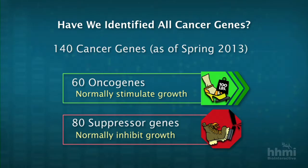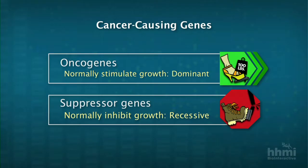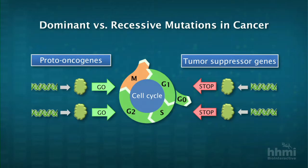Some cancer genes are oncogenes that, when mutated, now function as accelerators driving cell growth inappropriately, whereas others — the tumor suppressor genes — normally function as brakes, but when broken or disabled, the cell cycle can proceed more quickly.